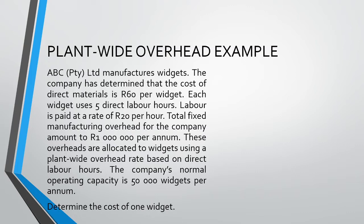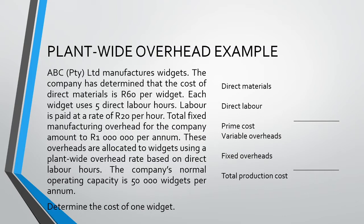Let us begin to answer this question by considering our basic layout of a product cost. We need direct materials and direct labor, which form our prime cost. We then need to add our variable and fixed manufacturing overheads to arrive at our total production cost. The scenario tells us that our direct material cost is 60 Rand, so we can fold that in. Next, we are told that we have five hours of labor at 20 Rand per hour. We can multiply these together to get a direct labor cost of 100 Rand.